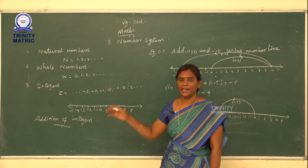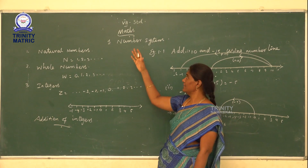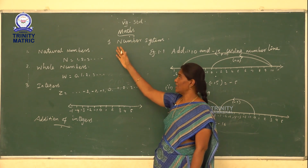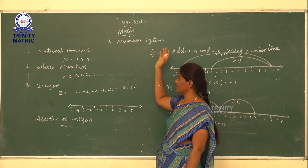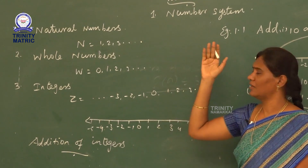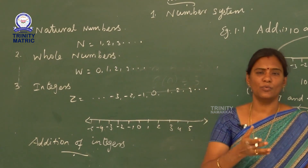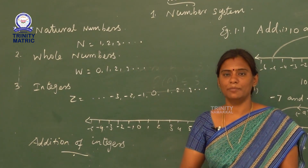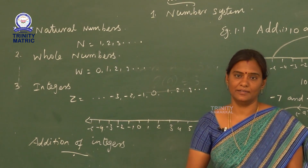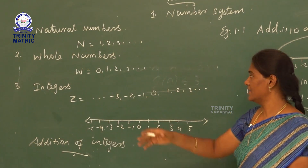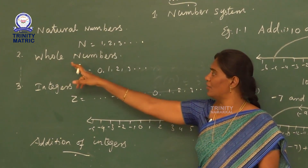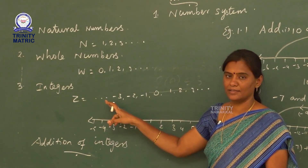Now I'm going to take 7th standard mathematics chapter 1, number system. What are the types of numbers you already studied in 6th standard? That is natural numbers, whole numbers, integers.